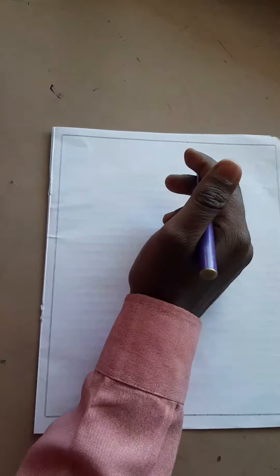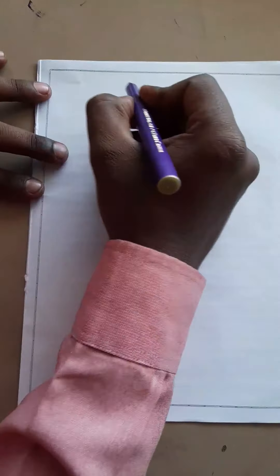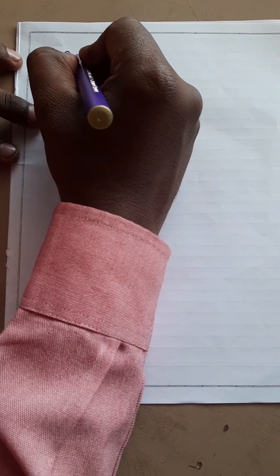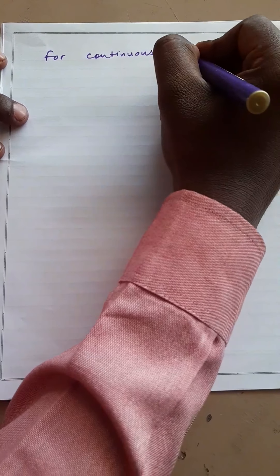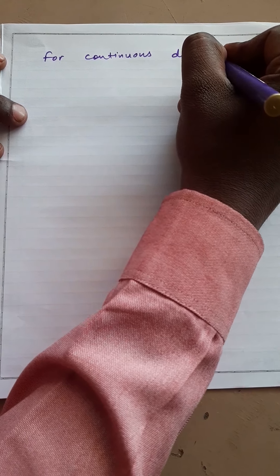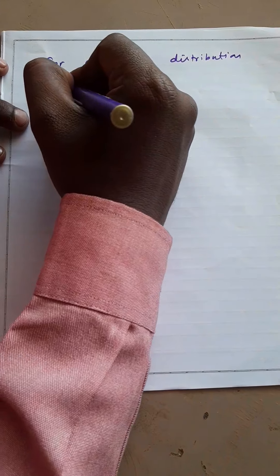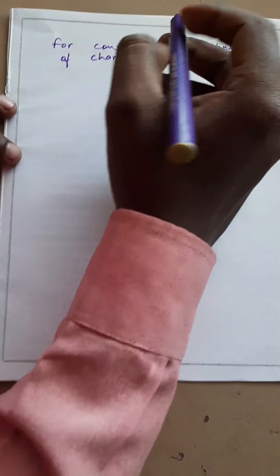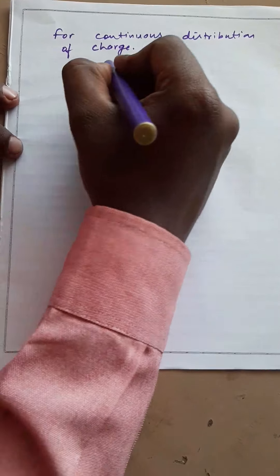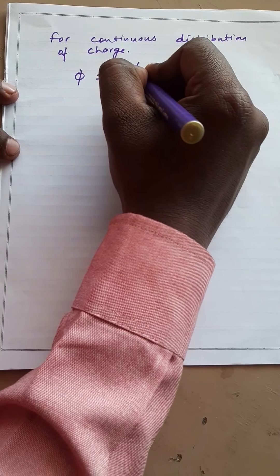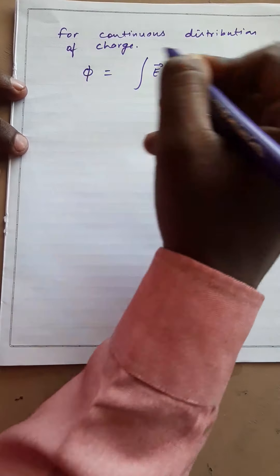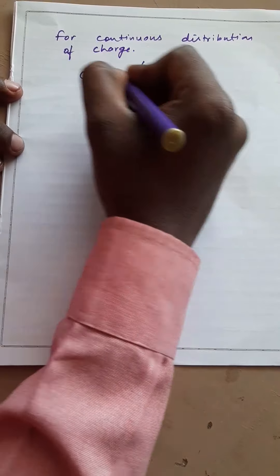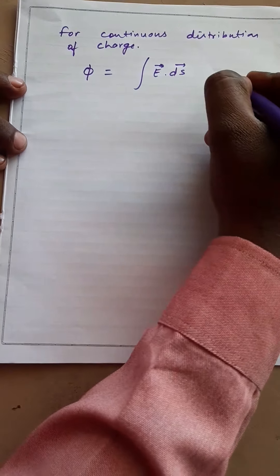Next. For continuous distribution of charge, we can write φ is equal to integration E dot ds. This is also we can call as electric flux.